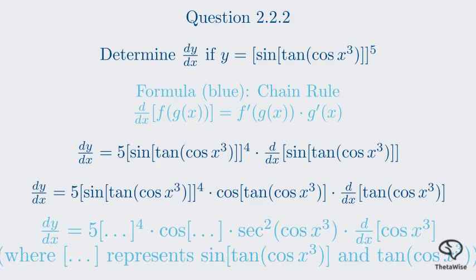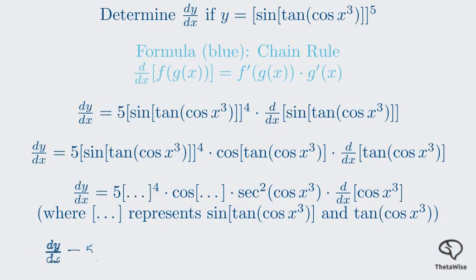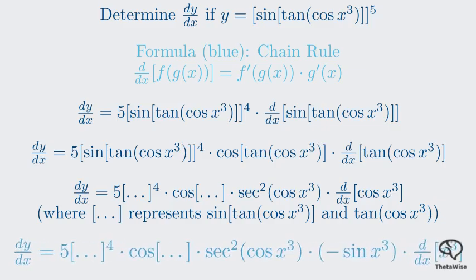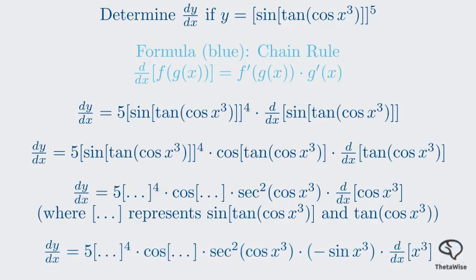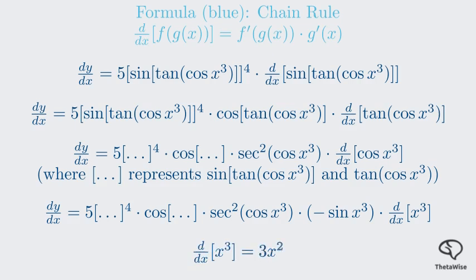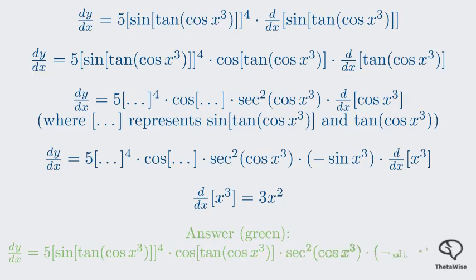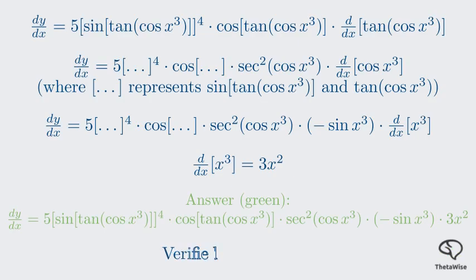Next, the cosine layer: the derivative of cosine is negative sine, so we multiply by negative sine of x cubed, and then by the derivative of the innermost function x cubed, which is 3x squared using the power rule. Putting all pieces together, our final answer is: 5 times the quantity sine of tan of cos of x cubed to the power of 4, times cos of tan of cos of x cubed, times secant squared of cos of x cubed, times negative sine of x cubed, times 3x squared. The memo presents the terms in a different order, but contains all the same factors. Our answer is verified.